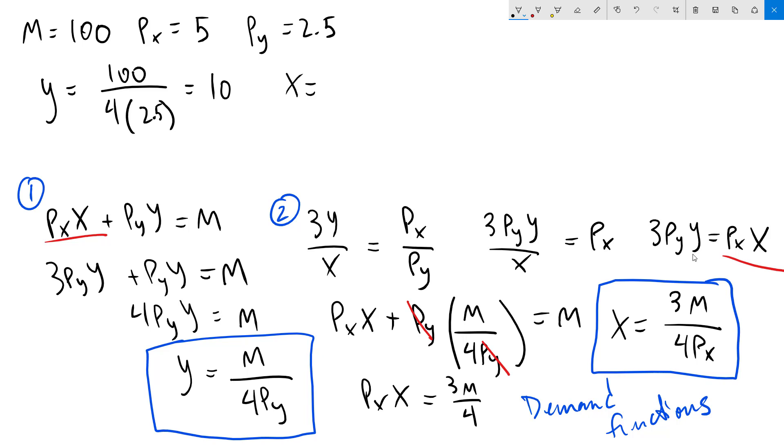Again, for x, we have 3 times 100 divided by 4 times 5, which is going to be 15.